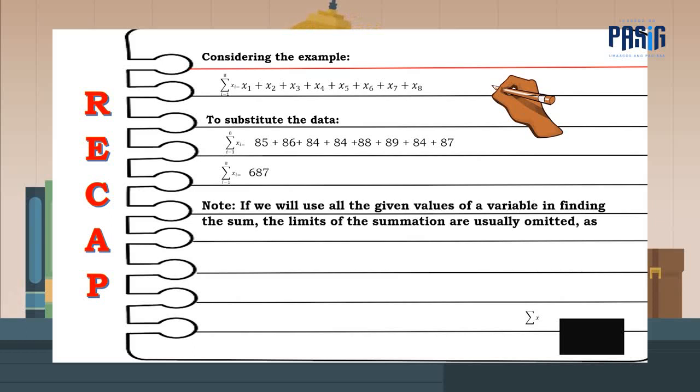If we will use all the given values of a variable in finding the sum, the limits of the summation are usually omitted. Look at the example below. Try this. Given the data as follows: 34, 33, 36, 30, 39, 37, 33, find the summation of x. Correct! The answer is 241.